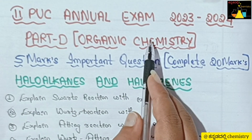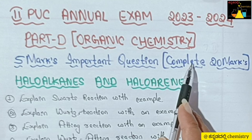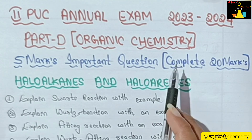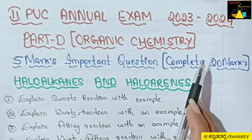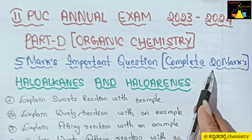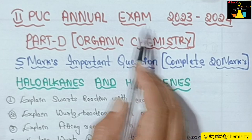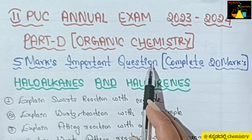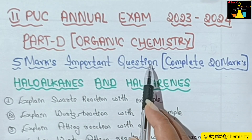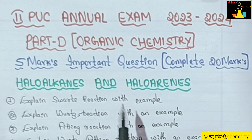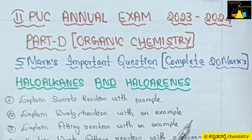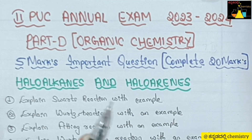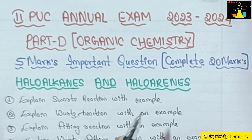Today we are discussing 2nd PUC Annual Examination 2023-2024 Part D — Complete Organic Chemistry. The total marks are 20 marks. There are 7 questions total, out of which 4 questions are to be answered, each carrying 5 marks. So 5 into 4 gives 20 marks. Each 5-mark question can be structured as 3+2, or 2+2+1, or 4+1.